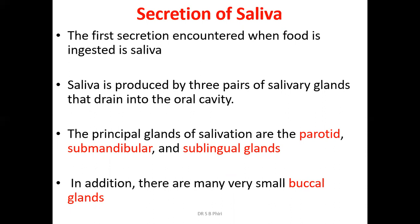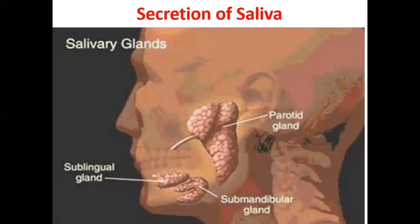The principal salivary glands are the parotid, the submandibular, and the sublingual. Additionally, there are small buccal glands in the mucosa of the buccal cavity that produce mucous saliva. The largest of the three pairs is the parotid, followed by the submandibular, then the sublingual, which is under the tongue. All of these drain saliva into the oral cavity via a duct system.